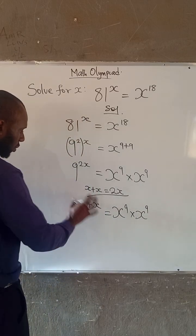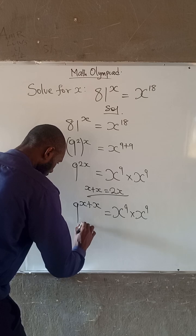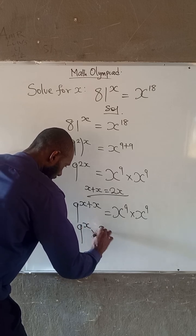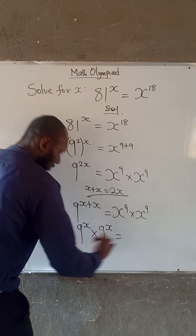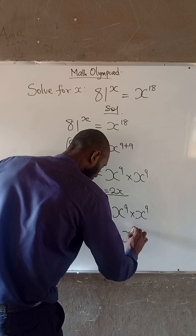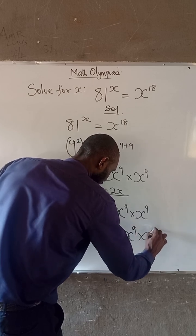Also, from the laws of indices here, this becomes 9 to the power of x times 9 to the power of x is equal to 2 to the power of 9 times 2 to the power of 9.